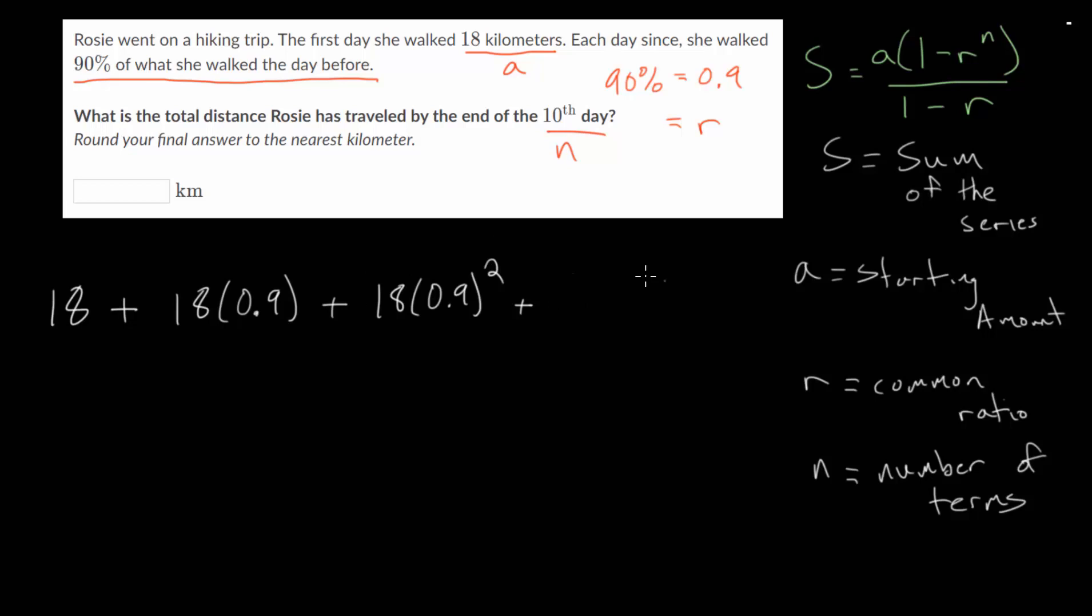The fourth day, we should say, will be 18 times 0.9 to the third power. And we need to go all the way to the 10th day. So that will be 18 multiplied by 0.9 to the ninth power.